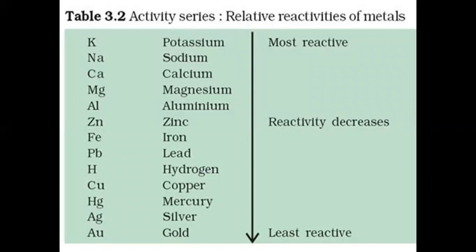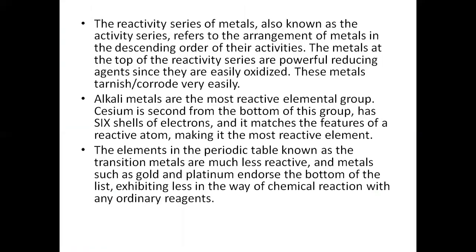This is the activity series — relative reactivities of metals. Potassium is the most reactive, then Sodium, then Calcium, then Magnesium, then Aluminium, then Zinc, then Iron, then Lead, then Hydrogen, then Copper, then Mercury, then Silver, and Gold. Gold and Silver are least reactive, which is why they can be kept in open space without rusting. But Potassium and Sodium cannot be kept in open space.